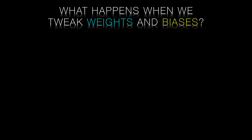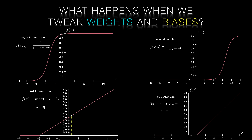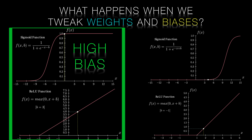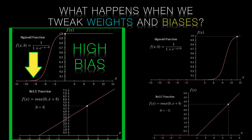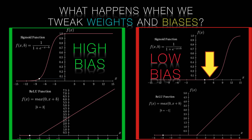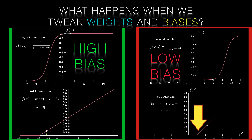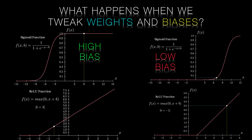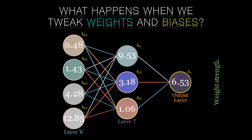Let's first think about what tweaking our weights and biases will do. We'll look at biases first. Our bias term determines whether our neuron will fire or not. A high bias is excitatory — a high bias means that the neuron fires for lower levels of activation. A low bias is inhibitory — we'll need a lot of input activation, or very high weights, or both, for the neuron to fire. Higher weights create more excitatory signals in neurons; lower weights will inhibit the activation of neurons.